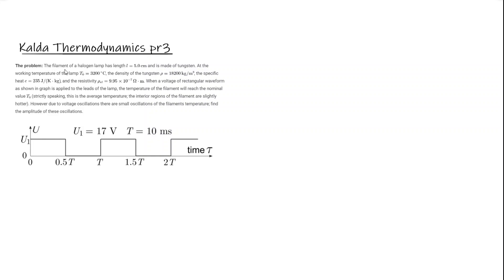The problem: The filament of a halogen lamp has length l equals 5 centimeters and is made of tungsten. At the working temperature of the lamp t sub 0 equals 3200 degrees Celsius. The density of tungsten rho equals 18,100 kilograms per meter cubed, the specific heat c equals 235 joules per Kelvin per kilogram, and the resistivity rho sub L equals 9.95 times 10 to the negative 7 ohm meters.